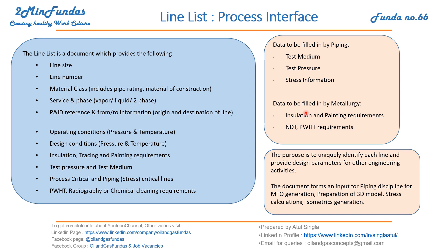Data to be filled by metallurgy includes insulation and painting requirements, NDT, and PWHT requirements. This information is given by the metallurgy department and this becomes part of the line list.